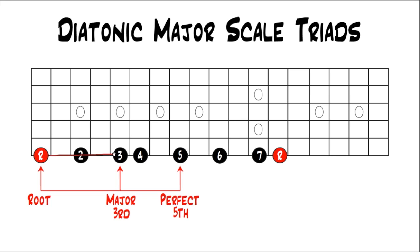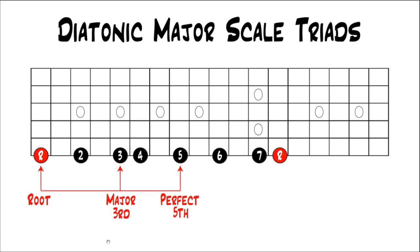So anytime you build one of these triads in the major scale, all you have to think about is skipping a note each time. You're just looking at it based on the major scale instead of chromatic notes. Still, the distance from the root to the three is a major third, the distance from the three to the five is a minor third, and the distance from the root to the five is a perfect fifth — root, major third, perfect fifth. It's the exact same thing, just another way to understand how it comes out of the major scale. So if you start on the root note and build a triad by skipping notes — stacking thirds — you end up with a major triad.